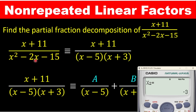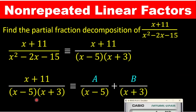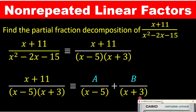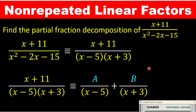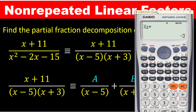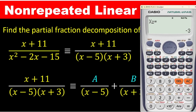We are now going to resolve this into partial fractions. The first denominator (x − 5) will be given a numerator of A, and the second denominator (x + 3) will be given a numerator of B. So we have resolved the function into partial fractions. The calculator will now help us determine the value of A and the value of B.